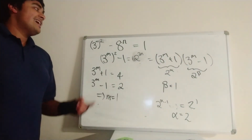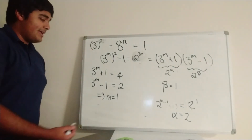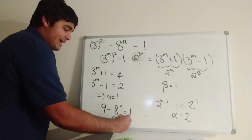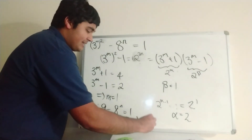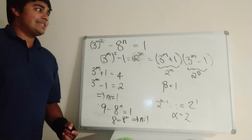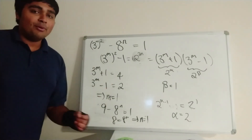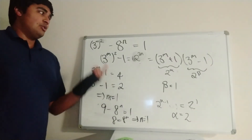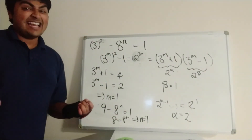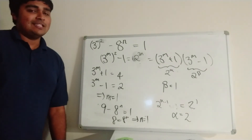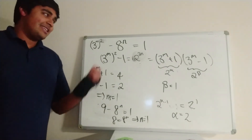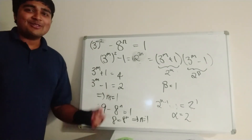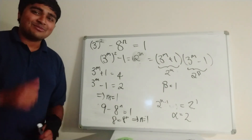With m equal to 1, plugging back into the original equation gives 3 squared, which is 9, minus 8 to the n equals 1. So 8 to the n equals 8, which gives n equals 1. There is indeed only one solution: the trivial solution where m and n are both 1 — the one we spotted at the start. Essentially, we've shown that if a solution exists, it must be m equals 1 and n equals 1. I hope you enjoyed this video. If you're new to number theory, these are the sorts of problems you'll see. Thank you for watching — I'll catch you in the next one. Have a great day.